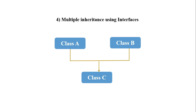Here, Class A and Class B are the two base classes, and from these base classes we create a new class, Class C. This type of inheritance is called multiple inheritance. To remember: when there are multiple base classes and from these base classes we derive a single derived class, that is called multiple inheritance.